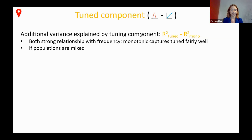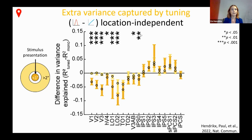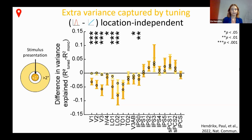We can look at how this difference between tuned and monotonic fits changes within visual field maps. As soon as the tuned model outperforms the monotonic model — when the difference becomes positive — the difference between eccentricity ranges disappears. So the additional value of having a tuned component is the same across the visual field. Conceptually, you could see this as an abstraction away from the spatial location of the stimulus.